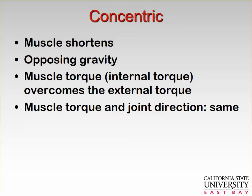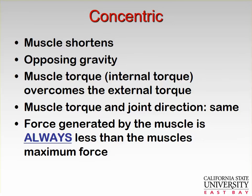During a dumbbell flexion-extension exercise, you are using your biceps brachii, which creates an elbow flexor torque. During the concentric contraction, you are flexing your elbow, so the muscle torque and the joint direction are both flexion. It's also important to remember that during a concentric muscle contraction, the force generated by the muscle is always less than the muscle's maximum force.